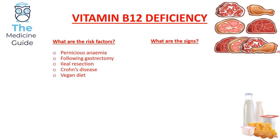The main risk factors that can lead to a vitamin B12 deficiency include gastrectomy, ileal resection, and Crohn's disease. Patients who adhere to a very strict vegan diet are also at risk because they exclude all sources of meat and dairy, making them very vulnerable to developing a vitamin B12 deficiency.